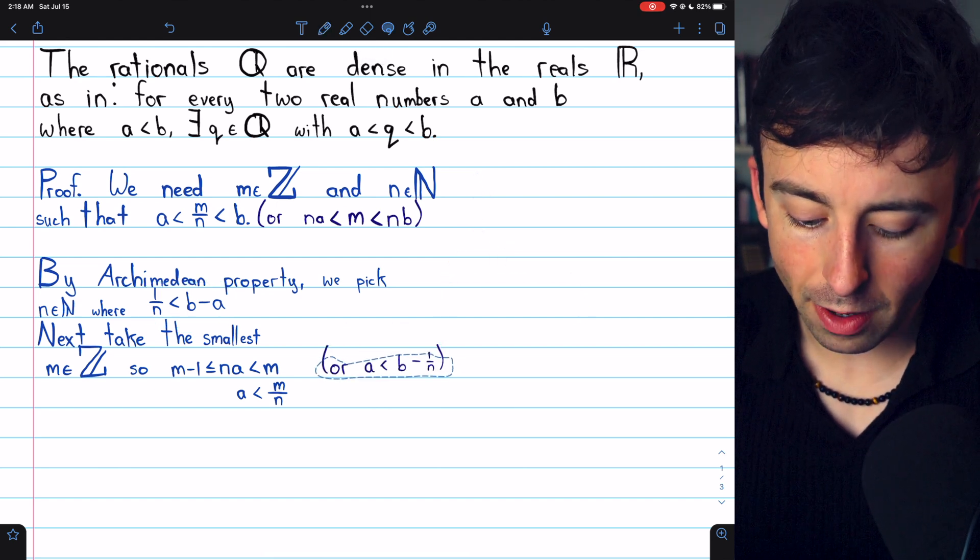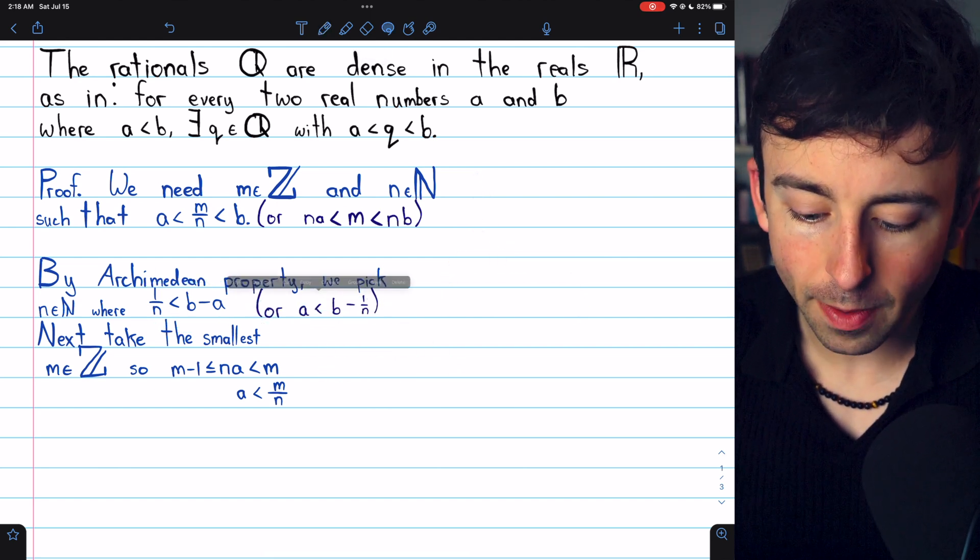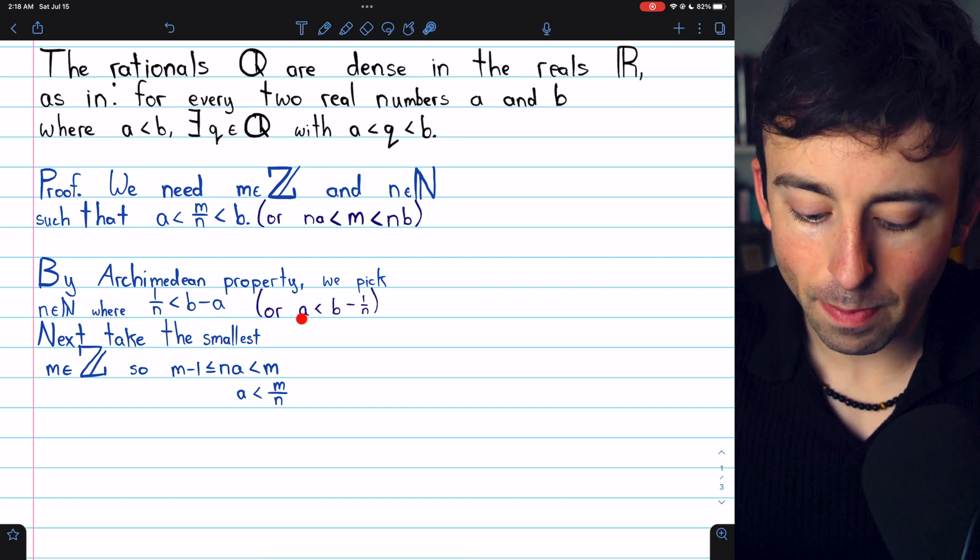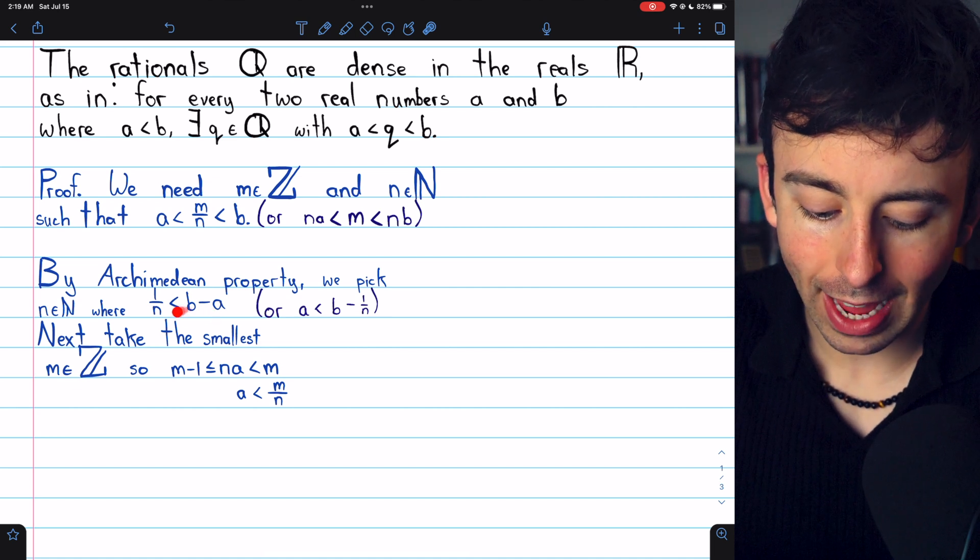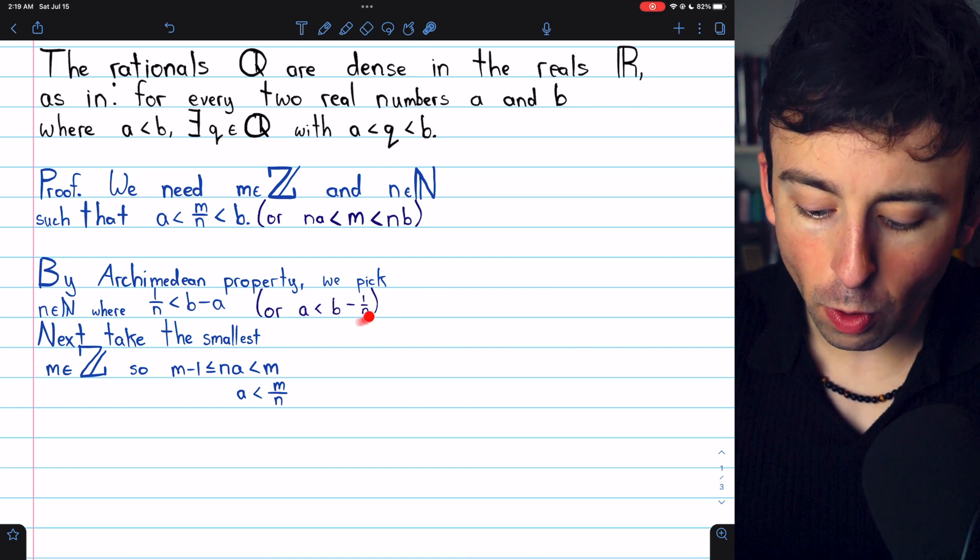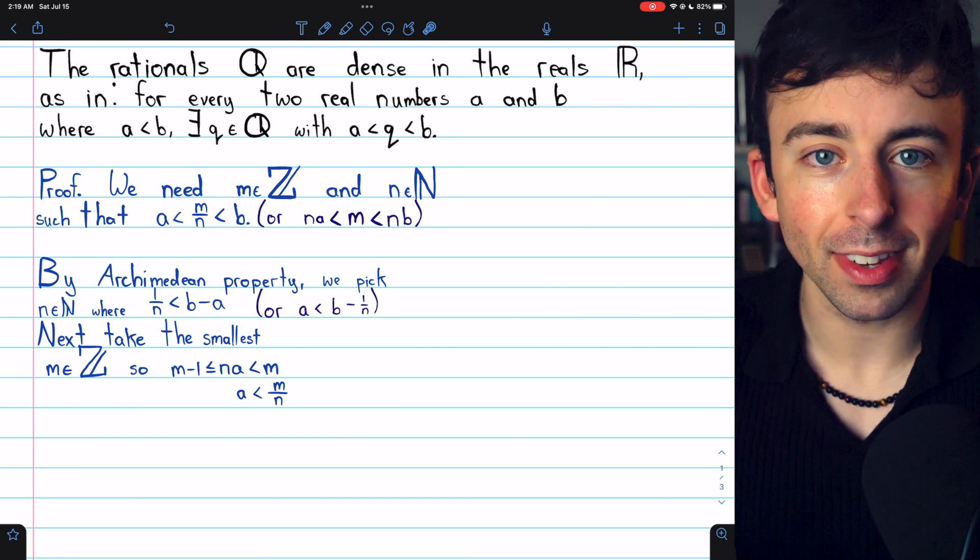Note also that 1 over N being less than B minus A is the same as A being less than B minus 1 over N. We get that by just adding A to both sides of this inequality and then subtracting 1 over N from both sides.